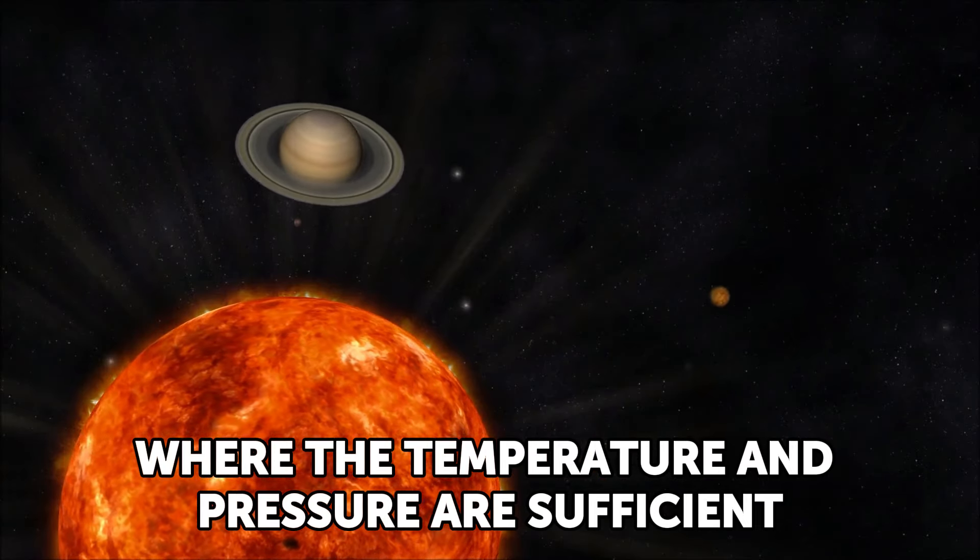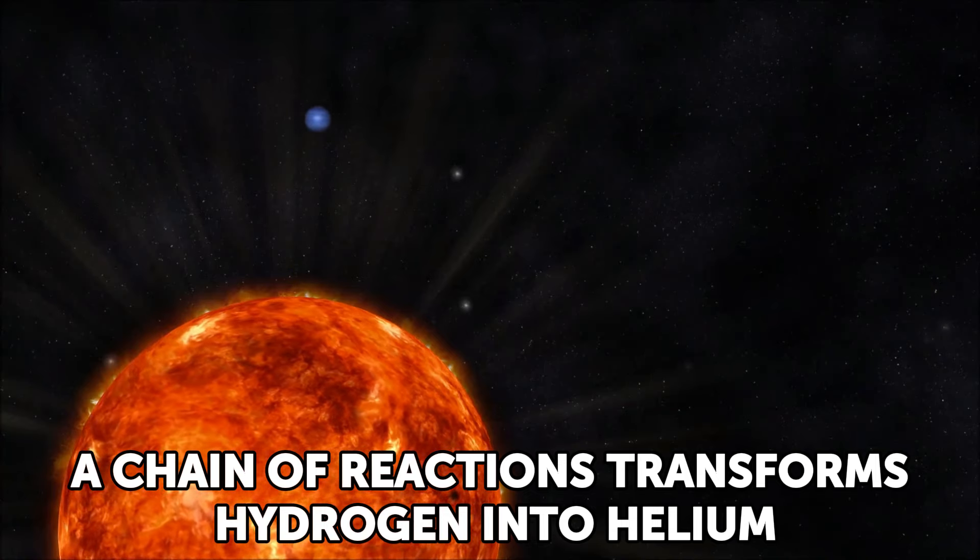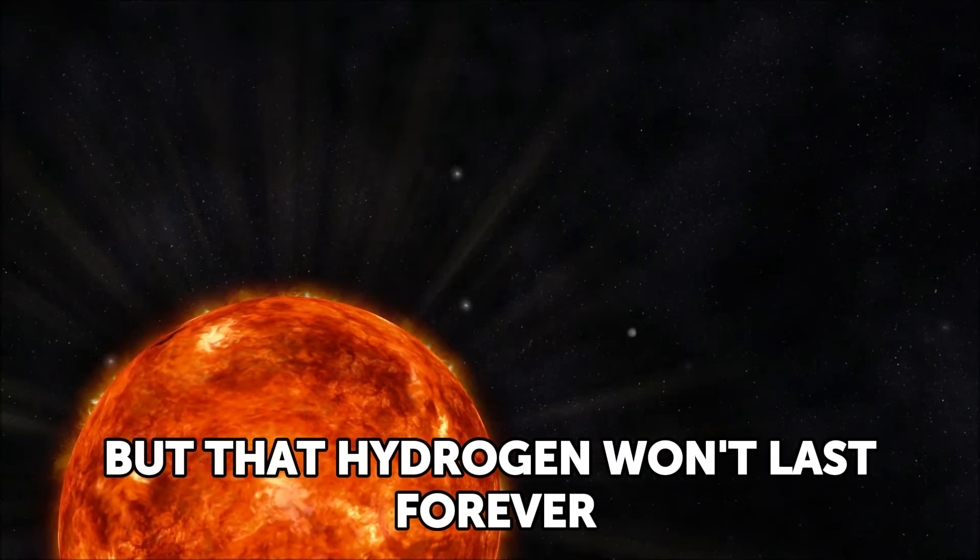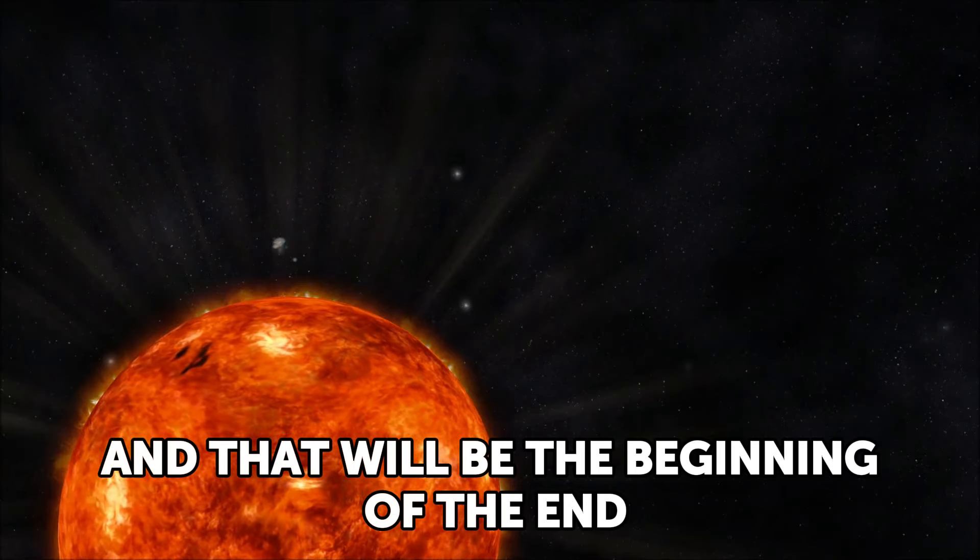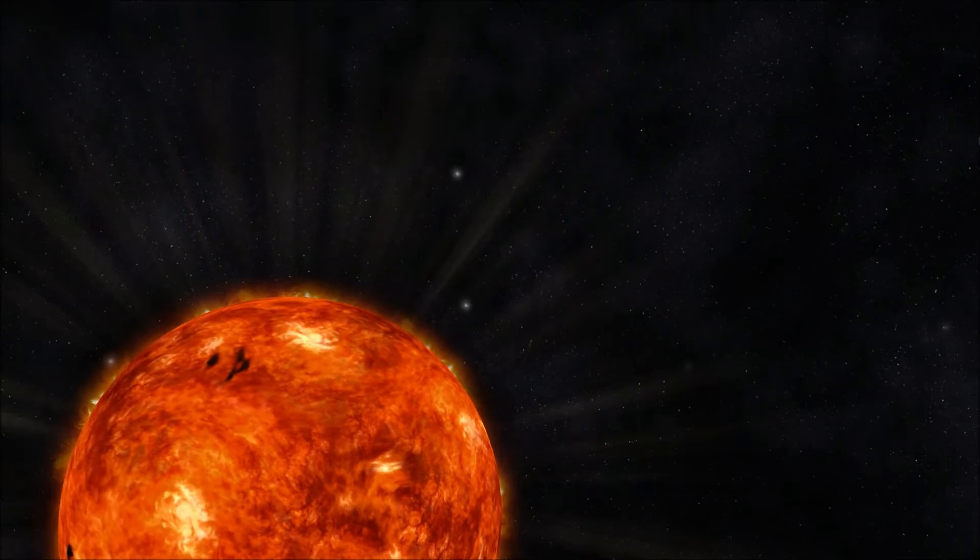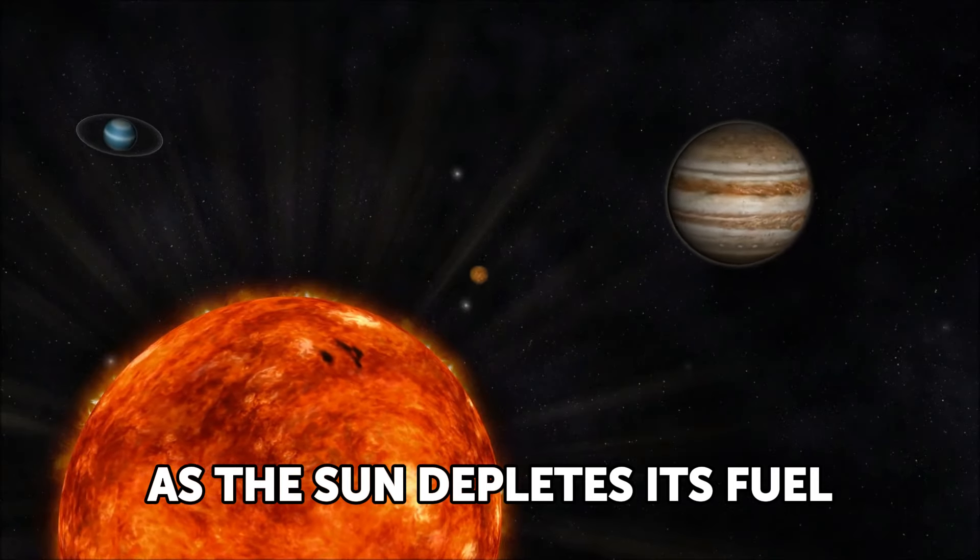Like all stars, the Sun produces the energy that keeps it stable through nuclear fusion in its core, where the temperature and pressure are sufficient. A chain of reactions transforms hydrogen into helium, but that hydrogen won't last forever. In about five billion years, it will be exhausted and that will be the beginning of the end.